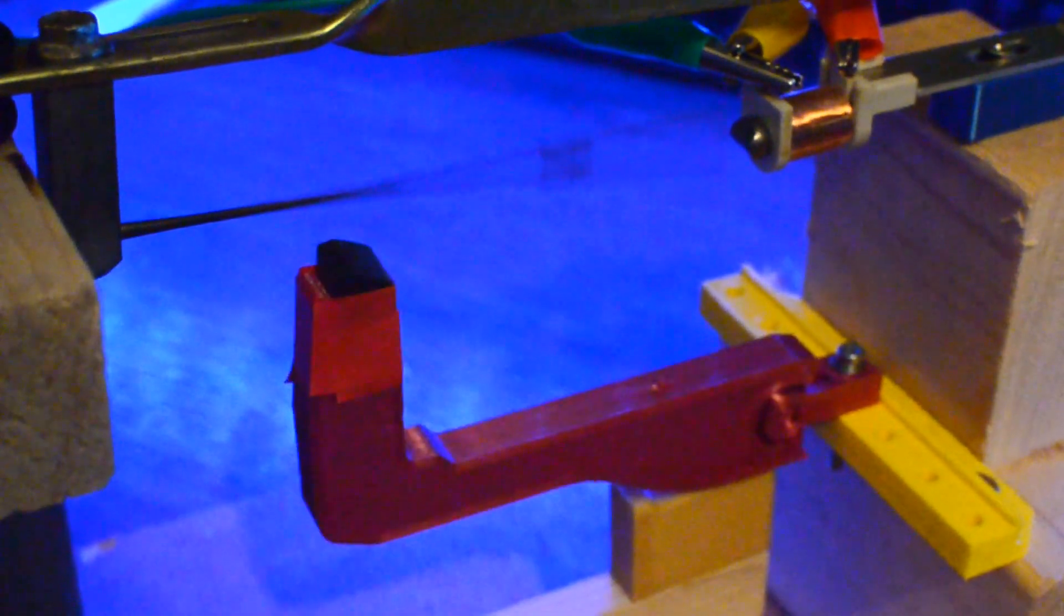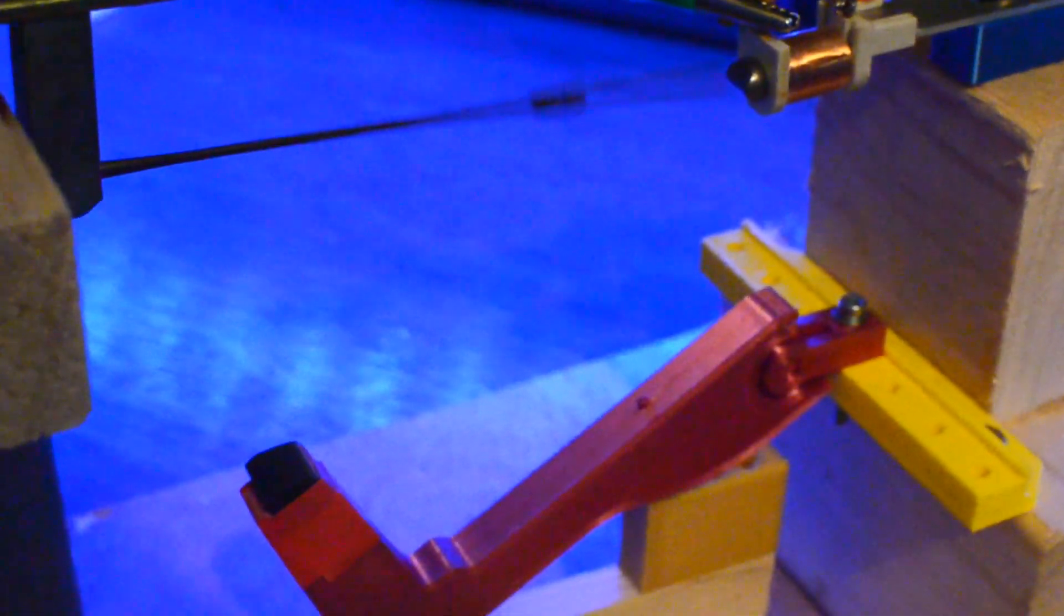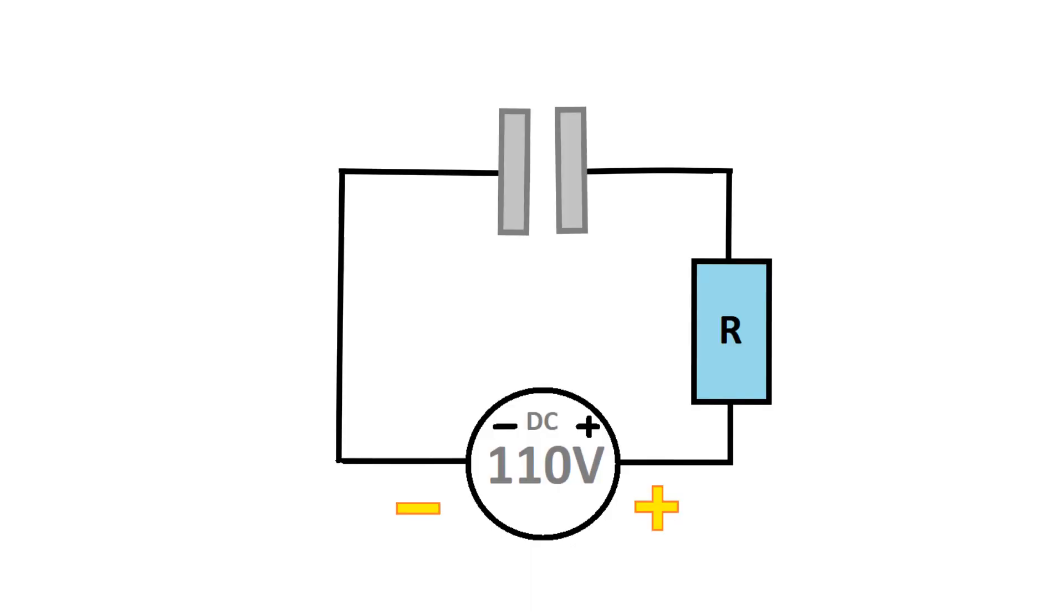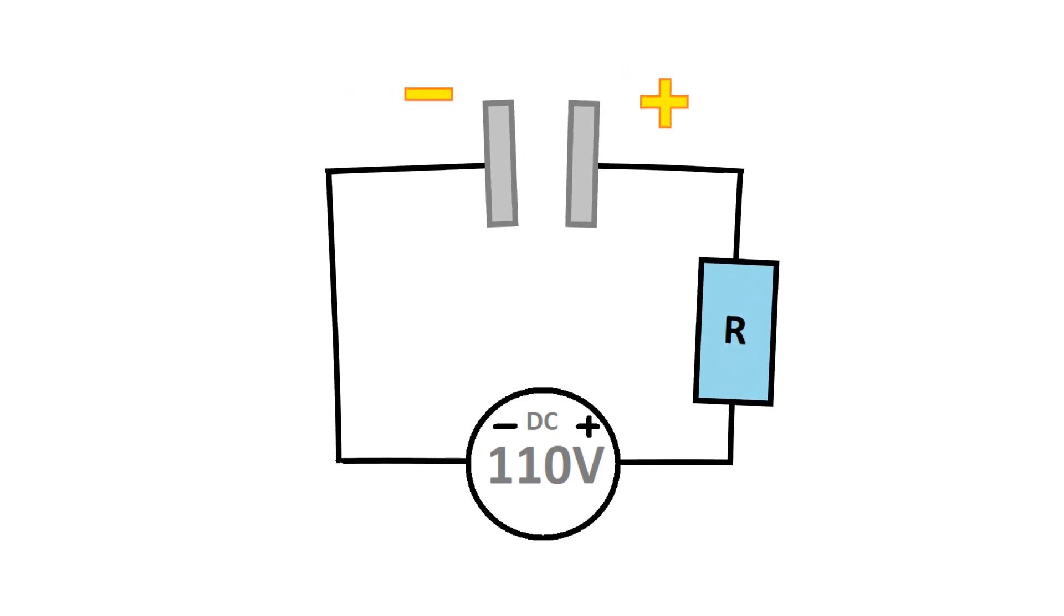But before we do this, let's briefly look at how a Wurlitzer pickup works as a comparison. This works a lot like a capacitor. When two plates are near each other, they can store electrical charge. But when one plate moves closer or further away, the amount of charge it can hold changes. So when one of these plates is vibrating, the change creates a small current that can then be amplified.